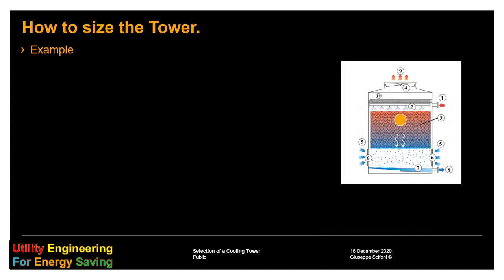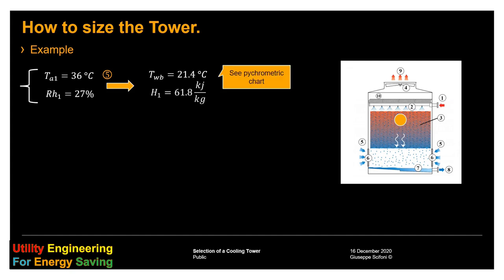Starting from the ambient condition, we know the temperature of the air and its relative humidity. On the right side, we have a picture with the cooling tower and position number five is the entry of the air. By means of the psychrometric chart, we can determine the wet bulb temperature and the corresponding enthalpy, H1.